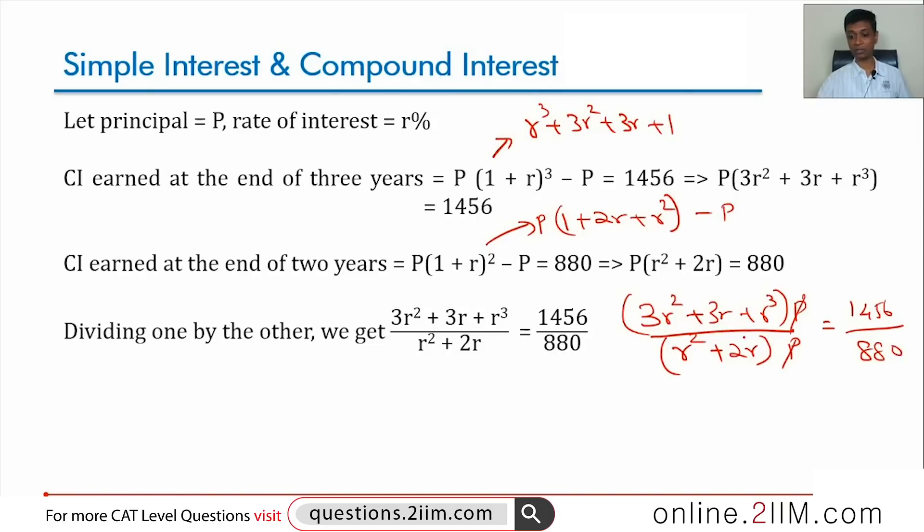If P gets knocked off, we can knock off a further R as well. R into 3R plus 3 plus R square by R into R plus 2 equals 1456 by 880.